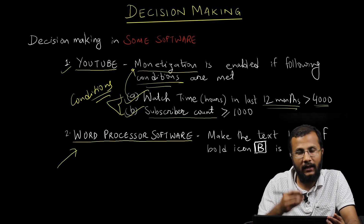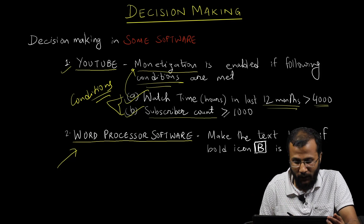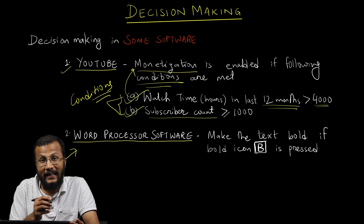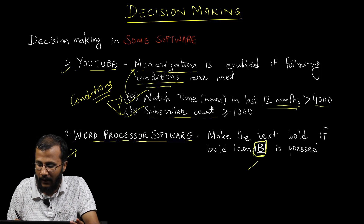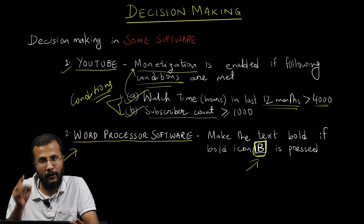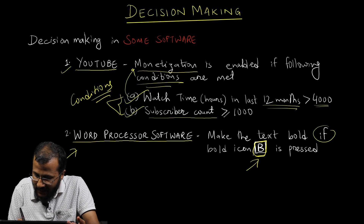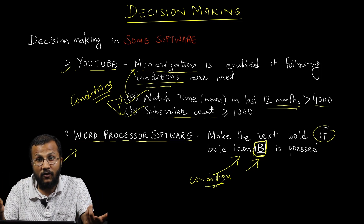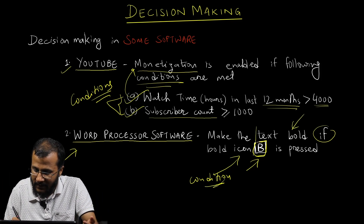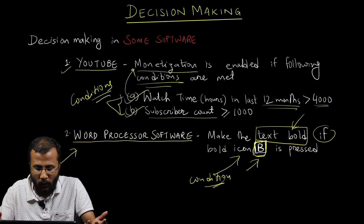Now let's talk about word processing software like Google Docs or MS Word. If you want to make text bold, you click the bold icon — the 'B' icon. The decision-making here is: if you press this icon, that is the condition. If it is true, the selected text is made bold. These are real-world examples of decision-making in software.